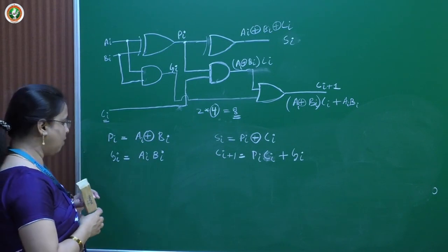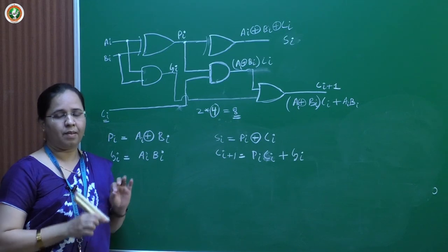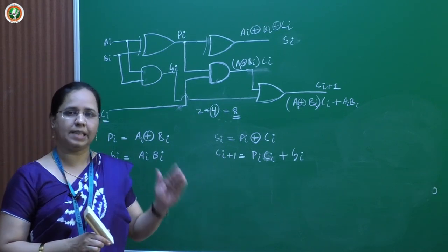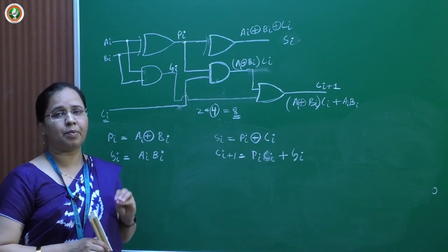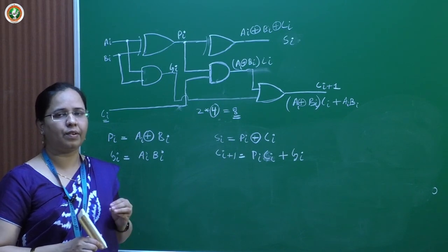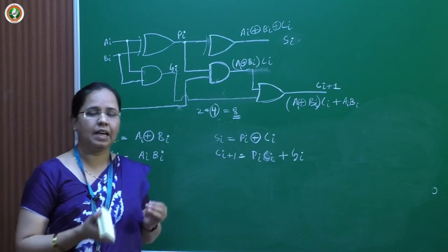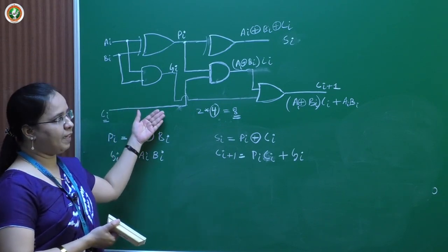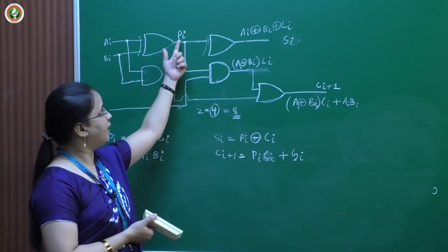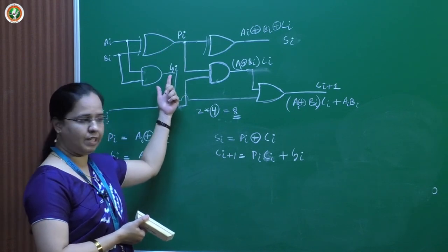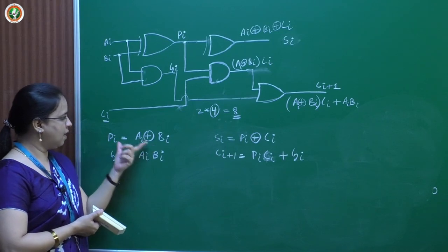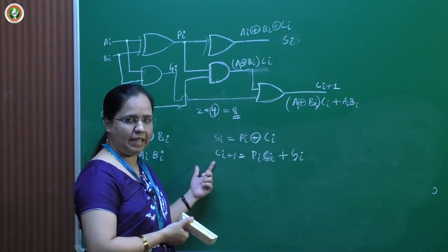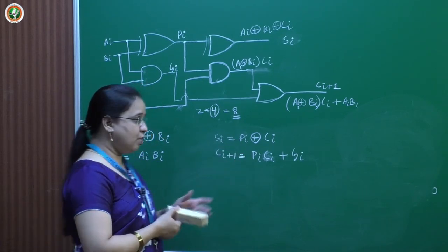What we want to do is design a 4-bit full adder where all carries are generated for all full adders at the same time — with the same propagation delay. To do that, we add additional logic known as the carry look-ahead generator, using the full adder implemented with two half adders. We have defined intermediate variables PI (carry propagate) and GI (carry generate), and expressed SI and CI+1 in terms of these variables. Now we need to find the sum and carry values for all four full adders.